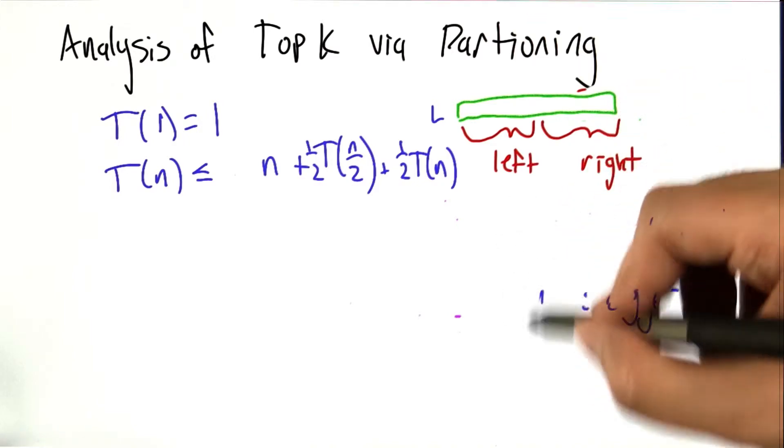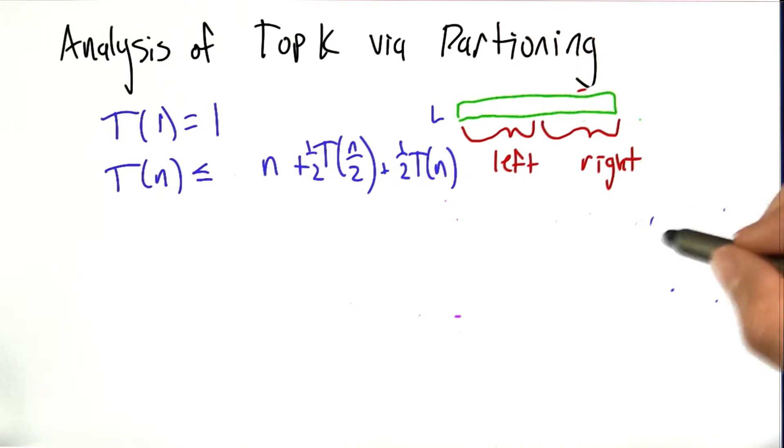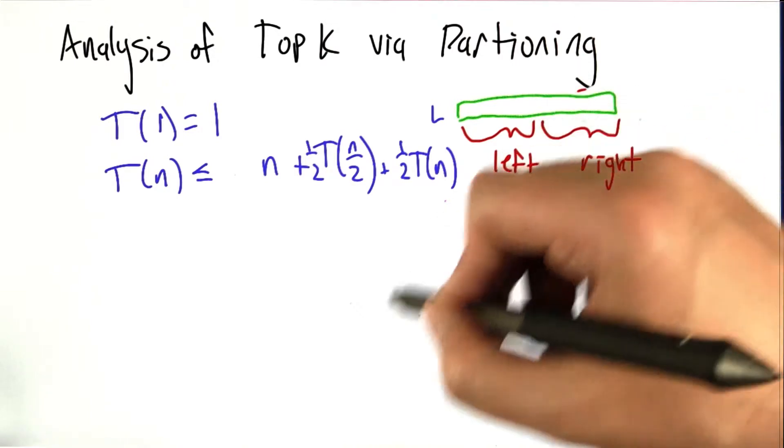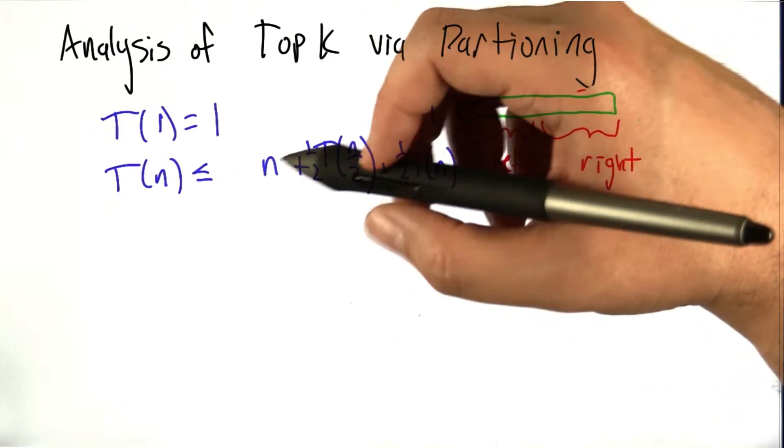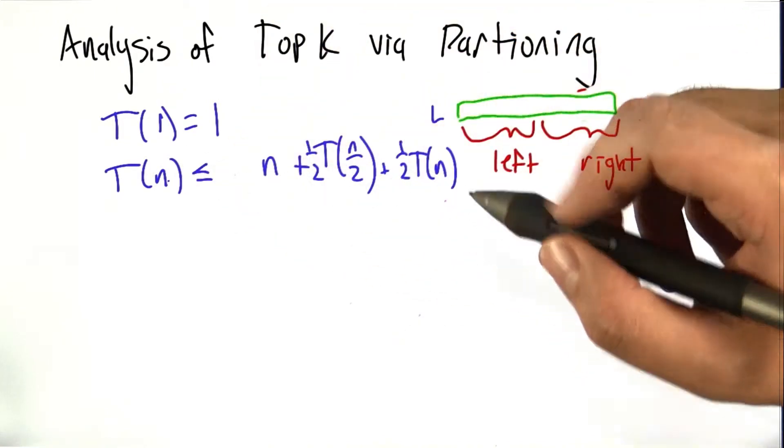So that's kind of a weird recurrence relation because it has probabilities in it. But really we want a bound on the running time. How many steps it's going to take, in this case on average, for top k to finish its work. And this gives us an upper bound. This recurrence relation gives us an upper bound.